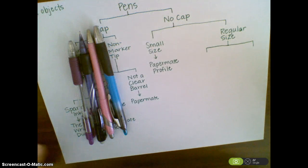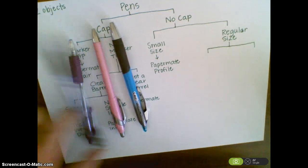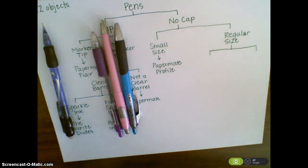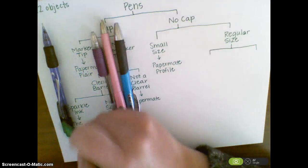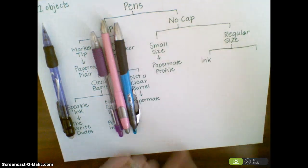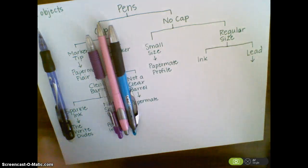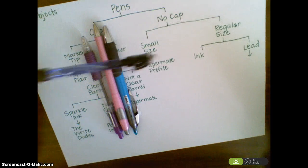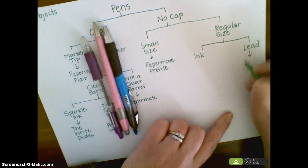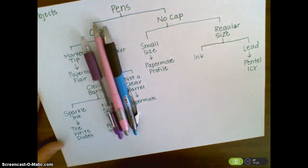Looking closely, I can tell this is a mechanical pencil — I only have one mechanical pencil, and the rest are all pens. Since a mechanical pencil doesn't have ink, I can say I've got some with ink and one with lead. Since I only have one with lead, I'm going to go ahead and name it — it's called the Pentel Icy. Pretty cool name — get it?